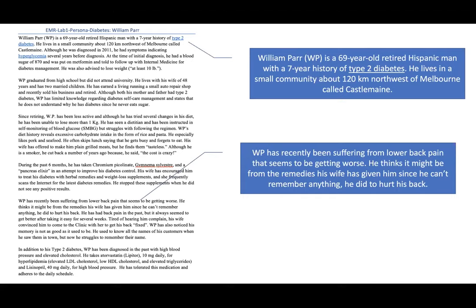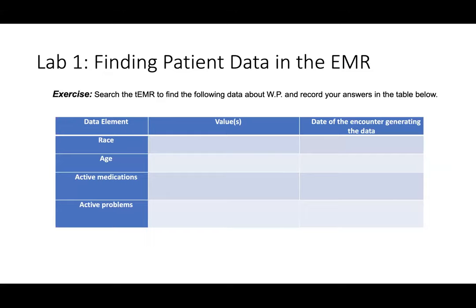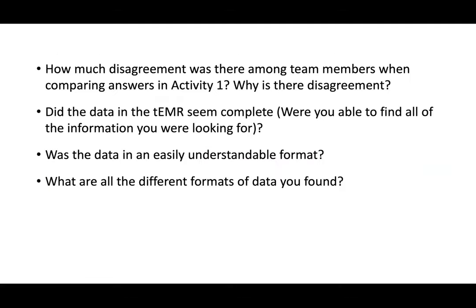We give students a list of data items to search for, record the values and where they found them, then in a small group they discuss: did you get the same values? Did you find them in the same places? Was it complete? What format was the data in? There's always surprise — students expect one place for every data element in an EMR, but seeing the same information in different places, sometimes disagreeing with each other, is very eye-opening.